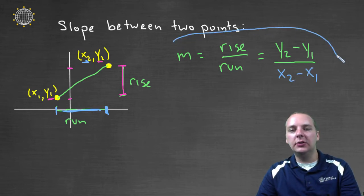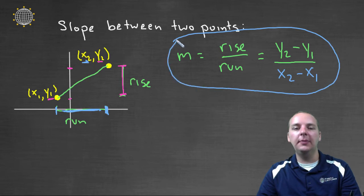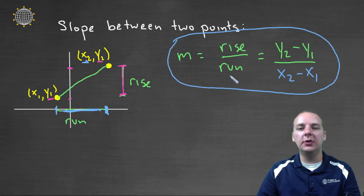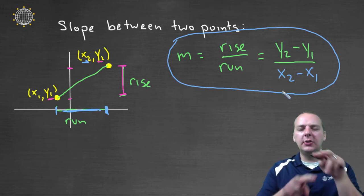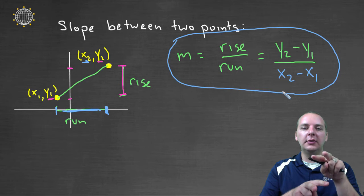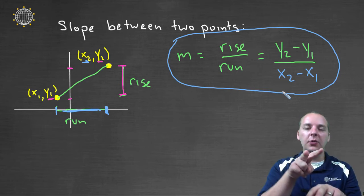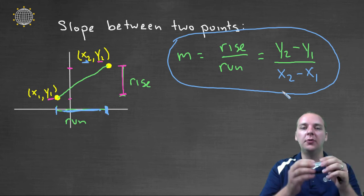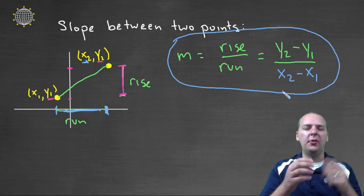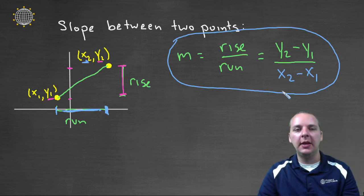So this right here is an extremely important formula. I would strongly encourage you to commit this formula to memory. The slope between two points is Y2 minus Y1, divided by X2 minus X1. A lot of students mess up the order of those, so be careful you don't say X2 minus X1 over Y2 minus Y1. Make sure to do rise over run, and not run over rise. That doesn't make any sense.